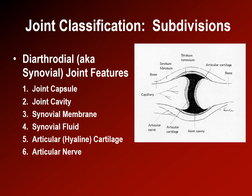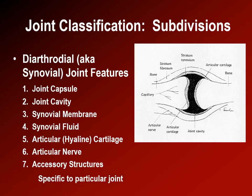There are also nerves to the capsule, and some joints have accessory structures like labra or menisci.